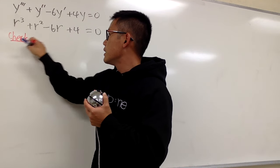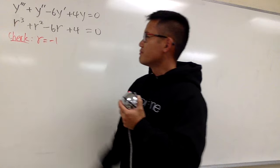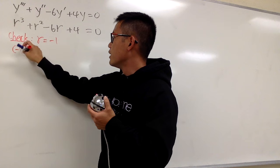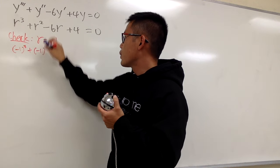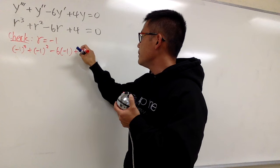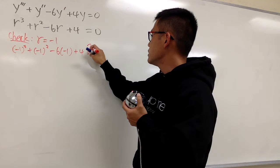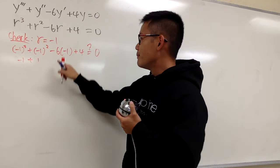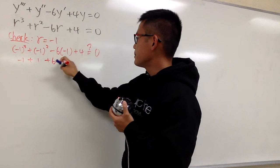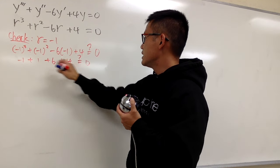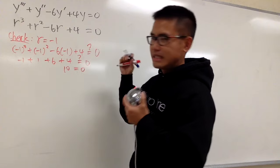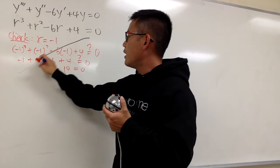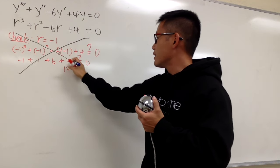I'm going to check r equal to negative 1 first. Plugging negative 1 into all the r's: we have negative 1 to the third power plus negative 1 squared minus 6 times negative 1, then add 4. That's negative 1 plus 1, so far so good because that's 0, but then positive 6 plus 4 gives 10 altogether on the left-hand side. So this is not it — r is not equal to negative 1.